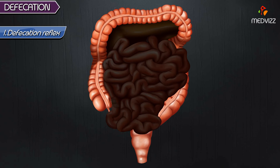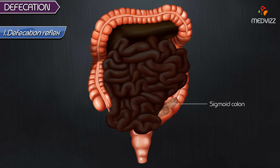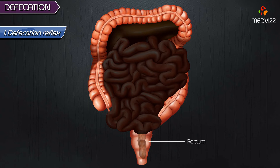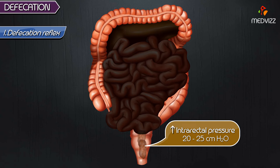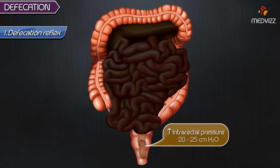Defecation reflex. Mass movement drives the feces into the sigmoid colon where it is stored. The desire for defecation occurs when some feces enters the rectum due to mass movement. An increase in intrarectal pressure to about 20-25 cm of solution causes the desire for defecation.